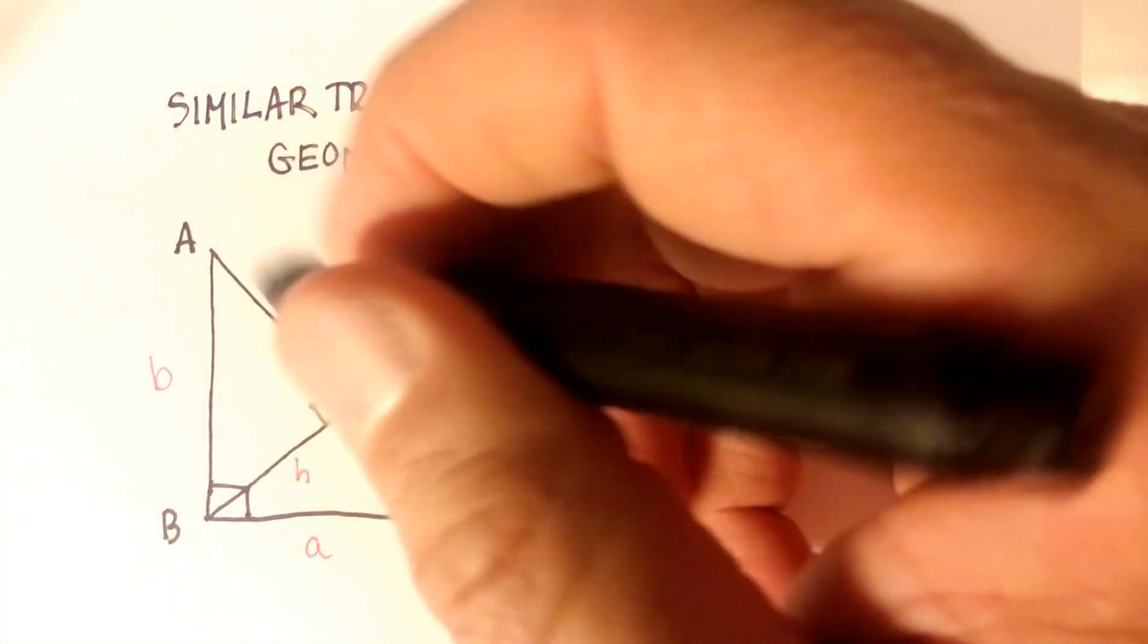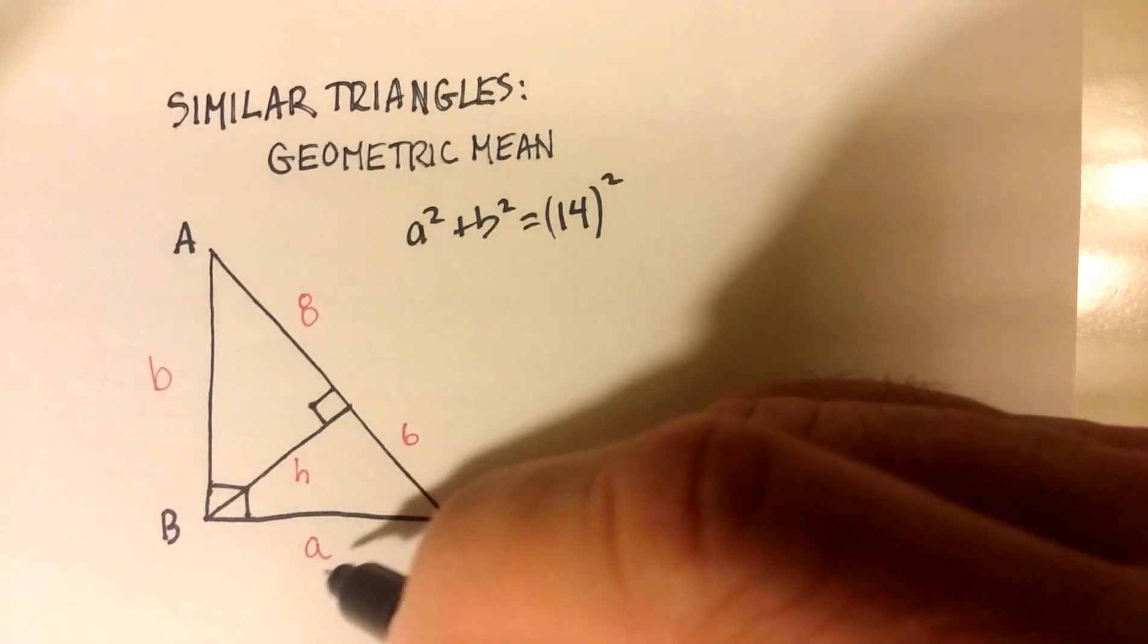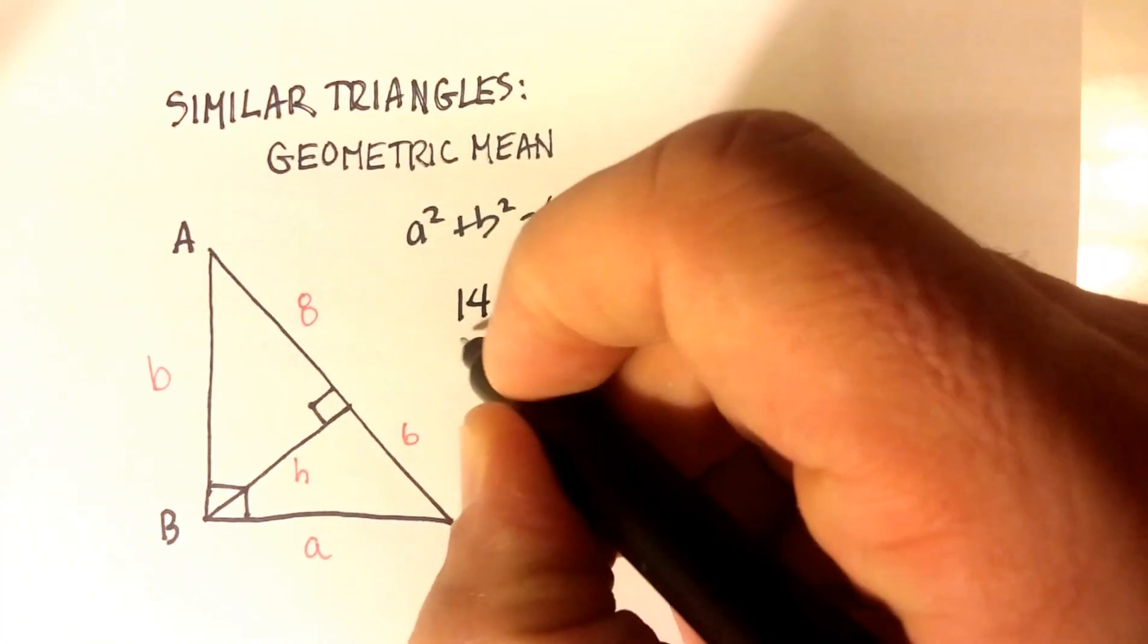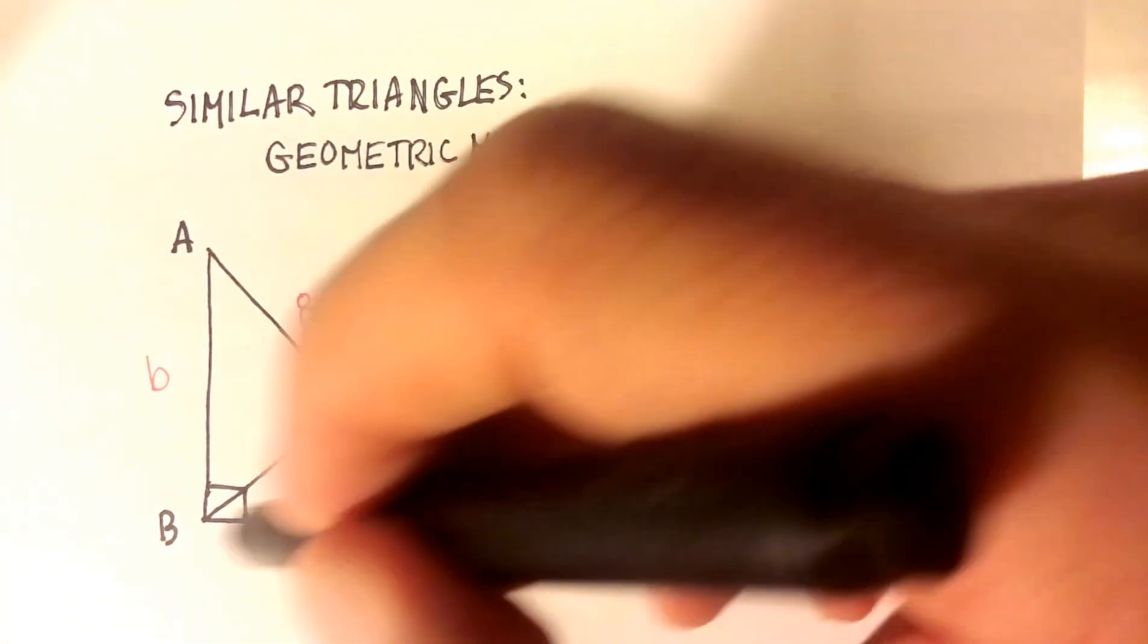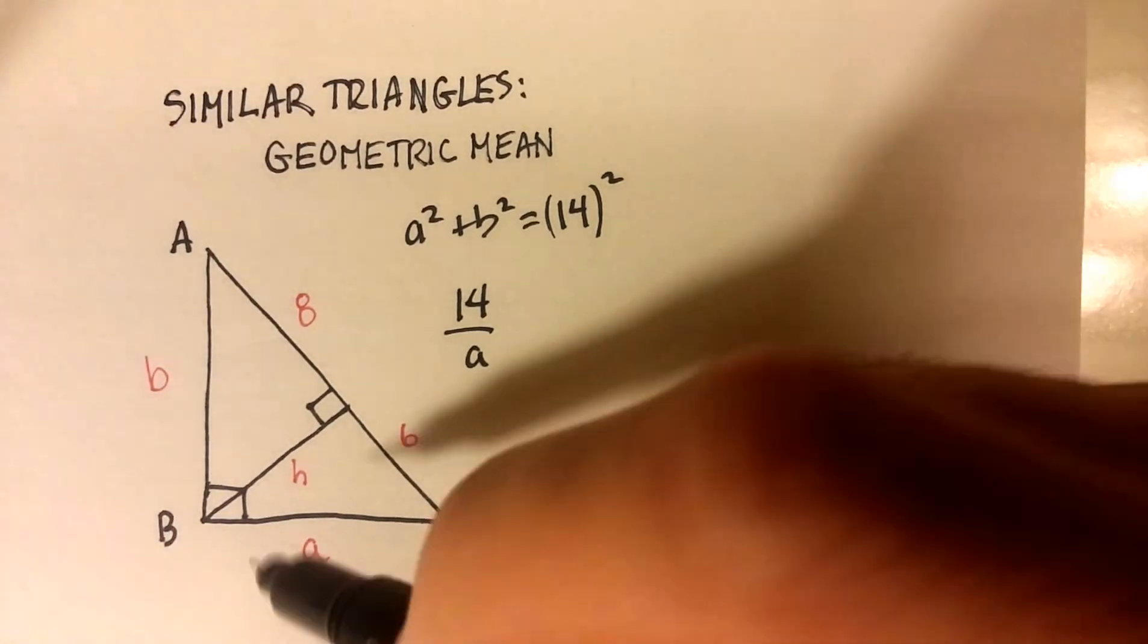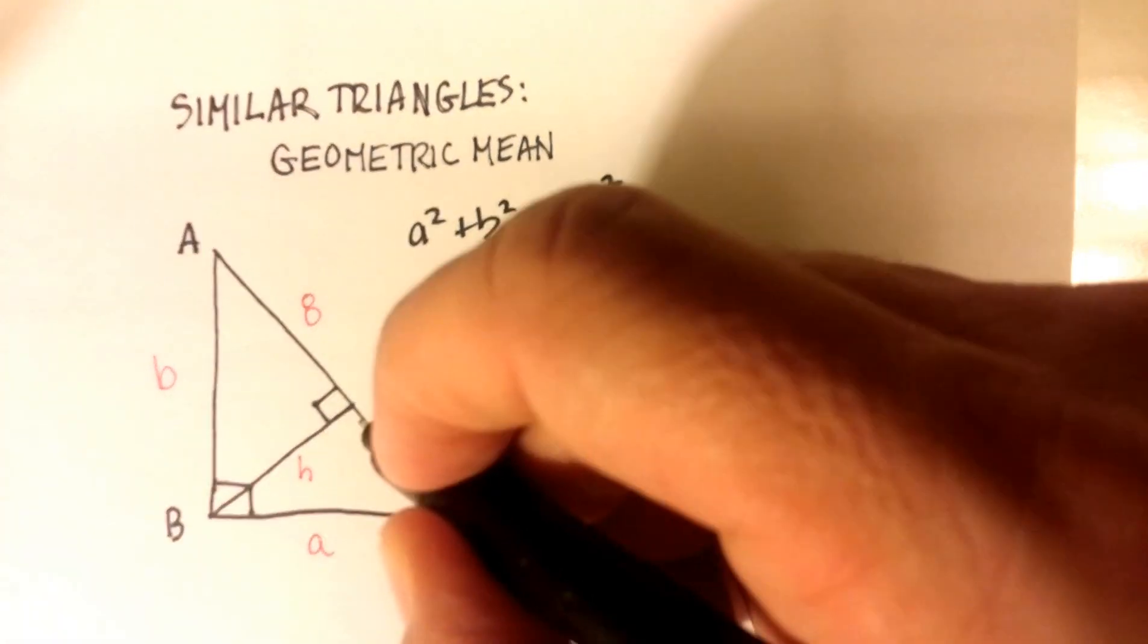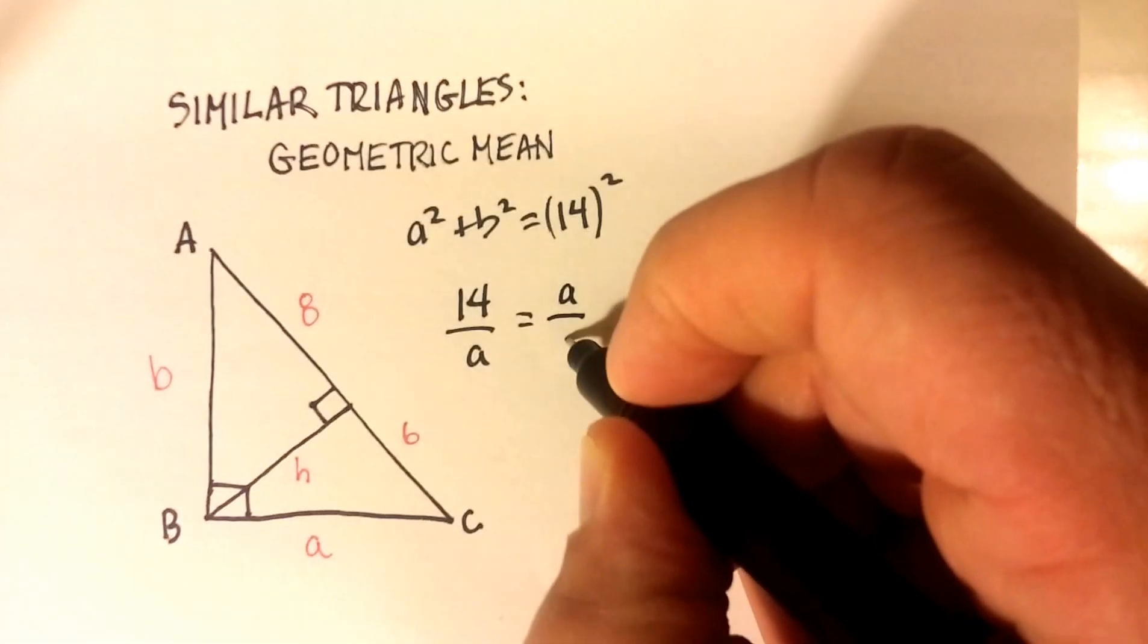14 is to A, and that's hypotenuse is to short leg, as hypotenuse A is to short leg 6.